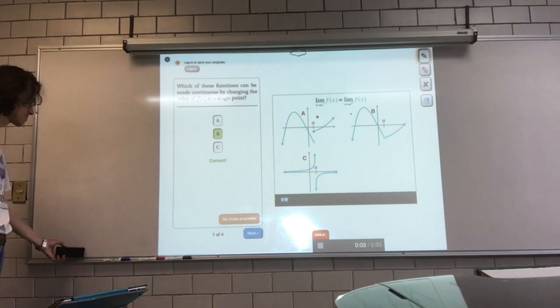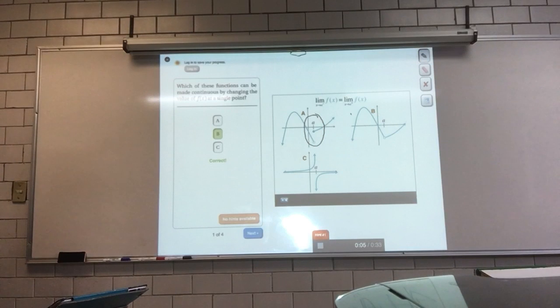In all cases, we want to see if we can change the value of f of a at some point a, to make the function continuous. Let's start with graph B. If this point here was filled in, so that the value of f at a was f of a, then we'd have a continuous function. We could draw it with our pen. With a and c, that's clearly not possible. So, the correct answer here is b.